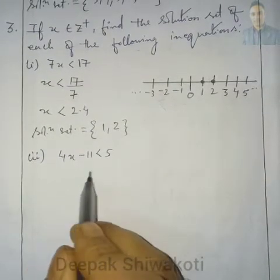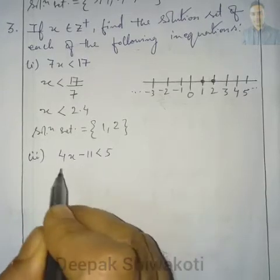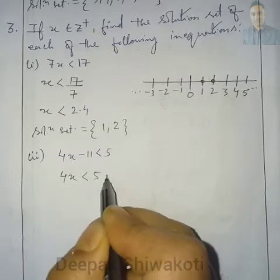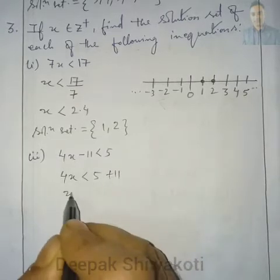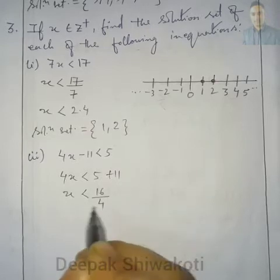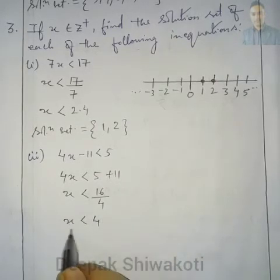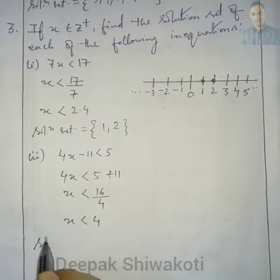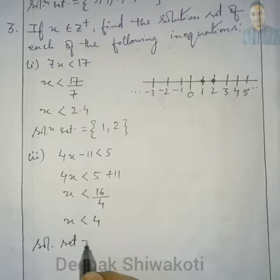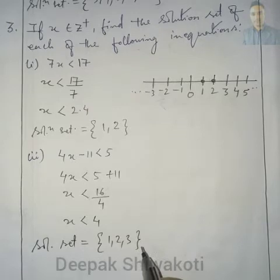Question 2: 4x - 11 < 5. Adding 11 to each side: 4x < 16. Dividing by 4: x < 4. From positive integers, the solution set is {1, 2, 3}. On the number line, we mark 1, 2, and 3.